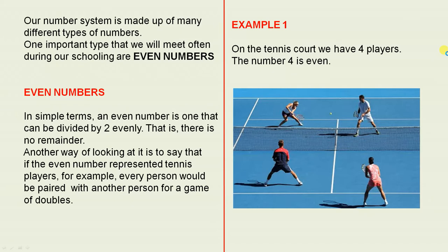So let's look at the very simple example one. On the tennis court we have four players. The number four is even, because here we have one pair of tennis players. See that? And here we have another pair of tennis players. So when you have that situation, that proves that the number four is even.